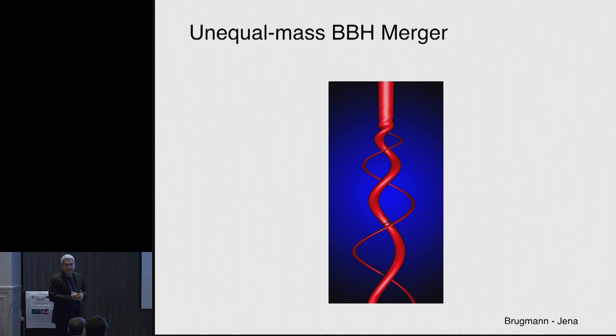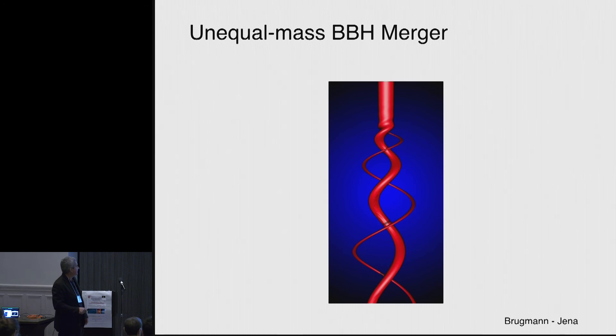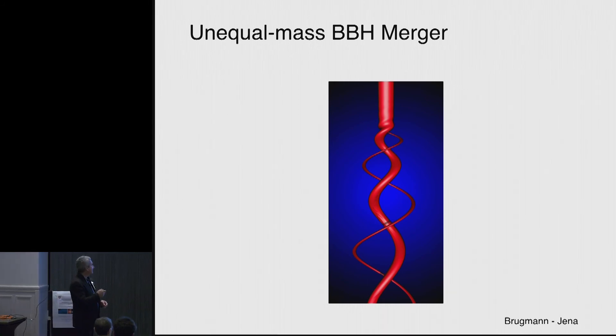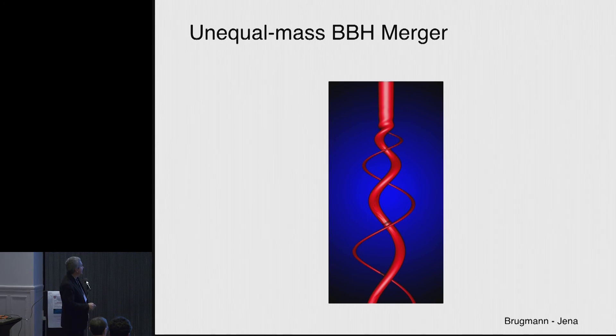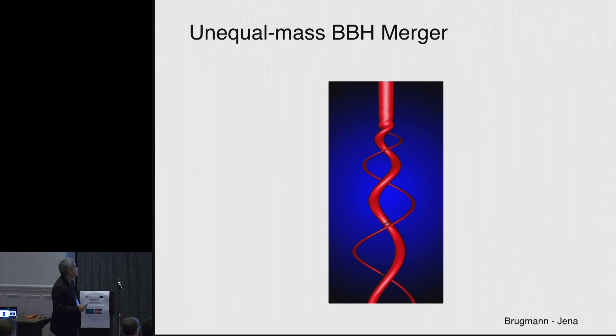This is another more recent example. This is from the group in Vienna by Bernd Brügmann in which you can have now two black holes. One of them larger than the other one. And you can actually see that it's not exactly axisymmetric, these tubes here that it has some spins. You have a much smaller black hole merging with the larger one. You can even see a little bit hints of how the final black hole relaxes as you reach the final stage which is a Kerr black hole.